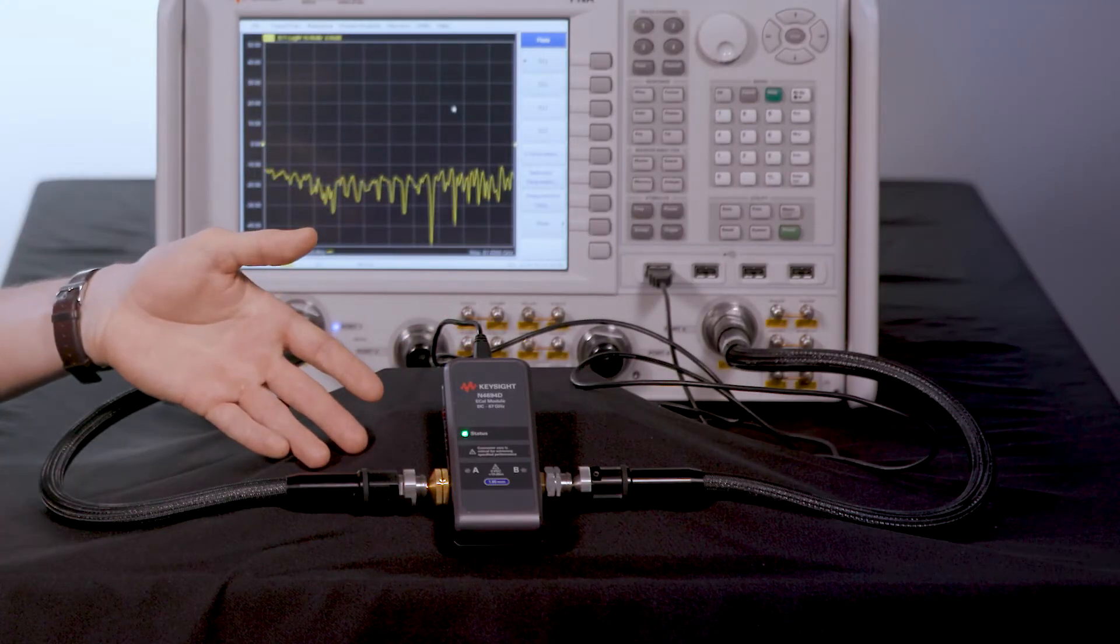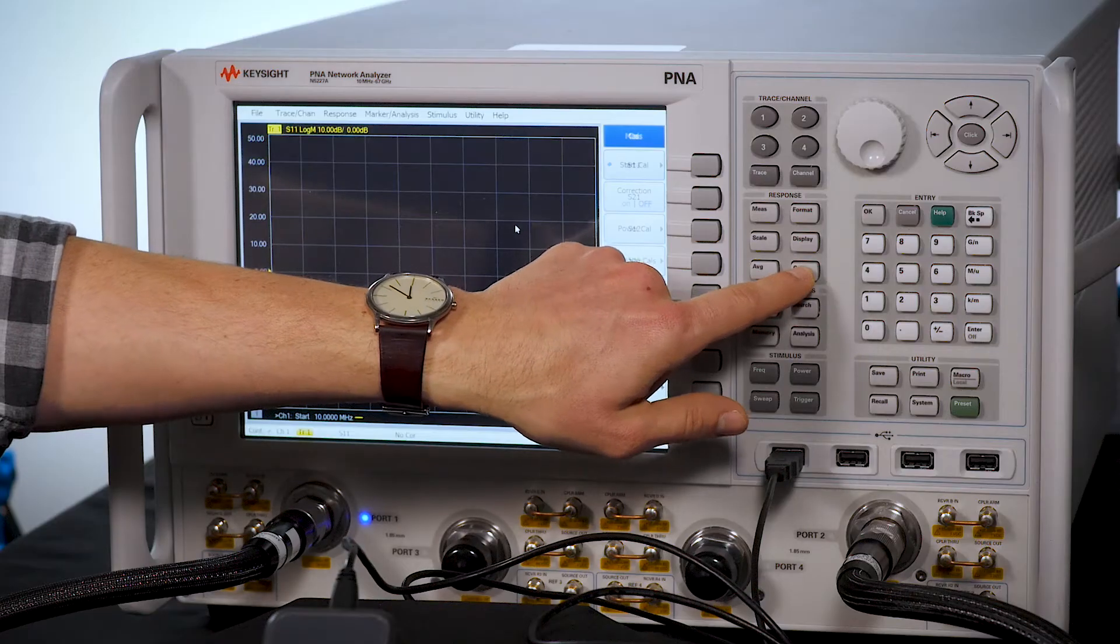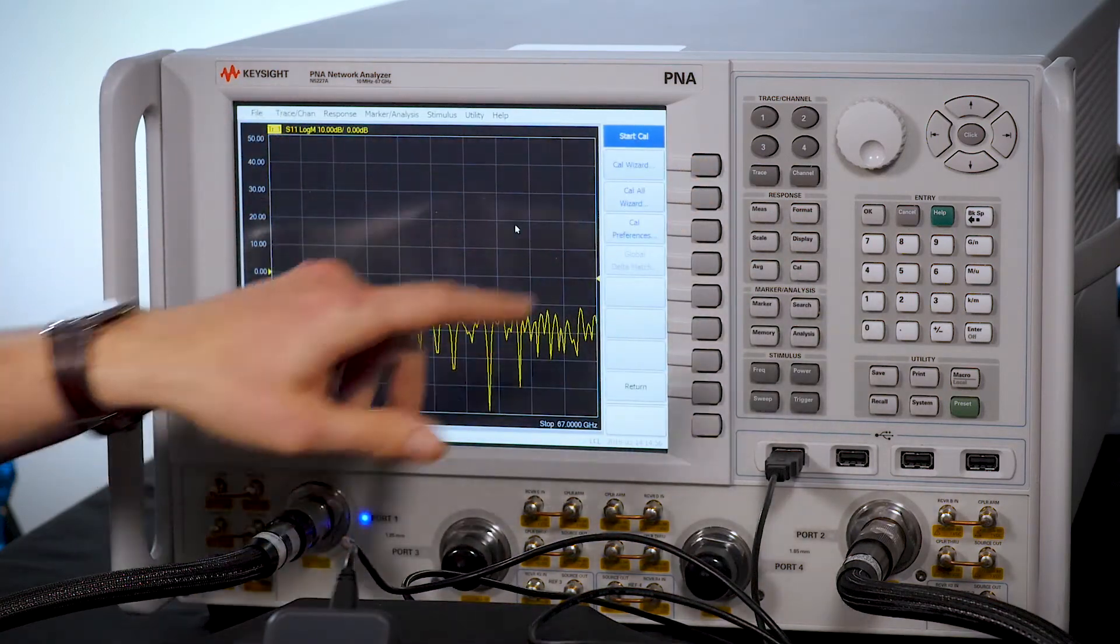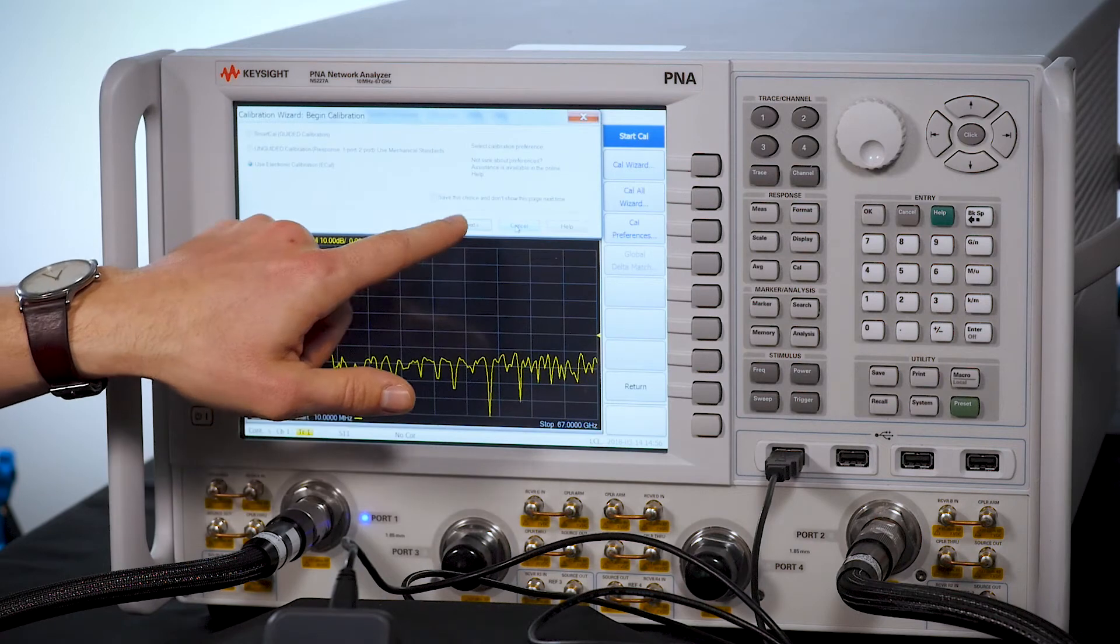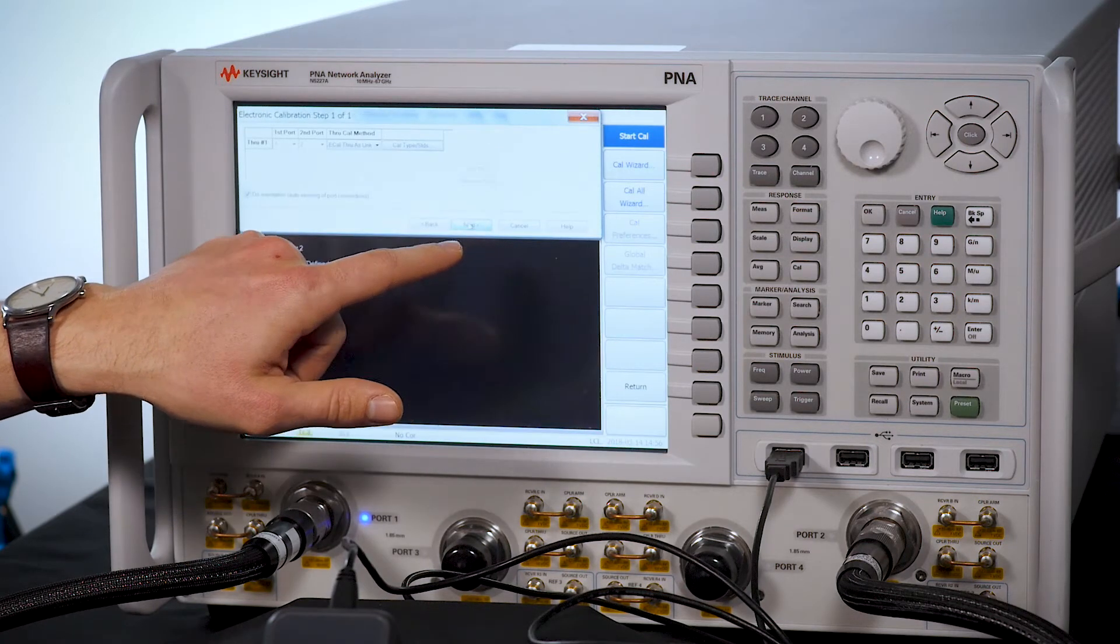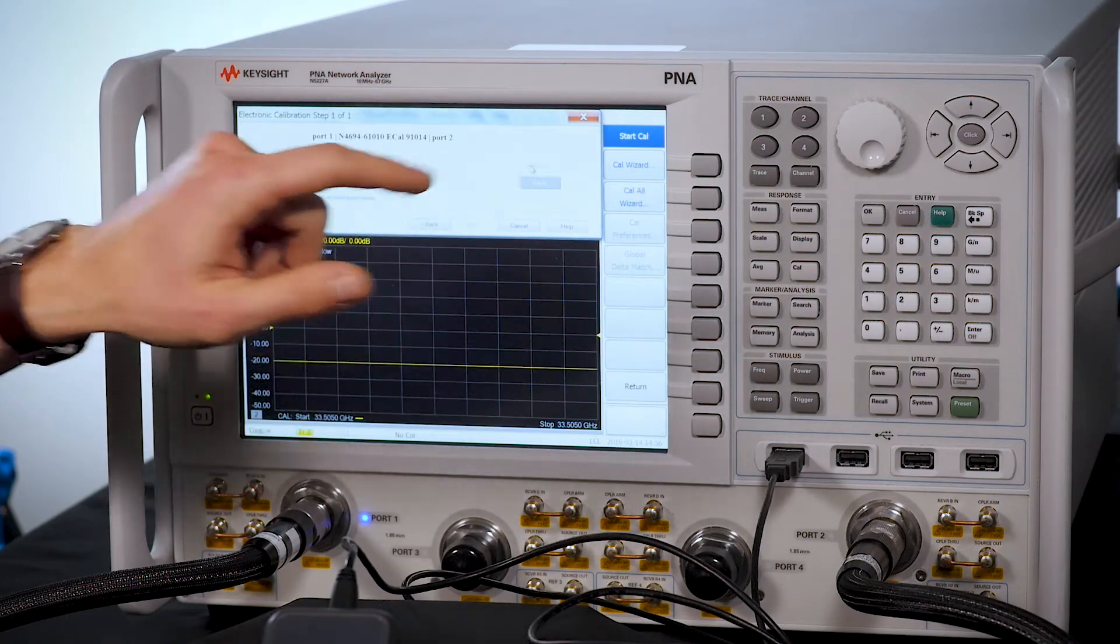To use an eCal, simply connect the USB cord and test cables. Go to the calibration wizard and select the type of calibration you would like to run. Follow through the steps of the wizard to customize your calibration. Once you finish setting up your calibration, go ahead and start it.